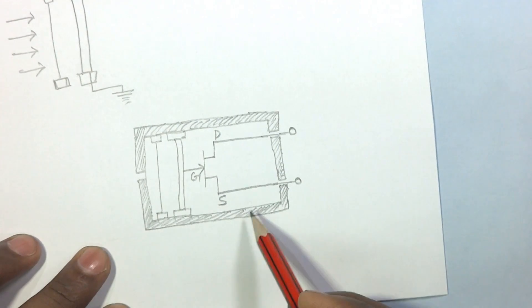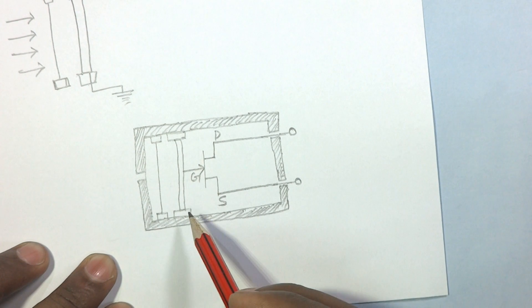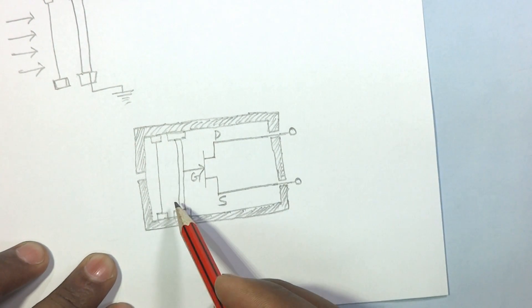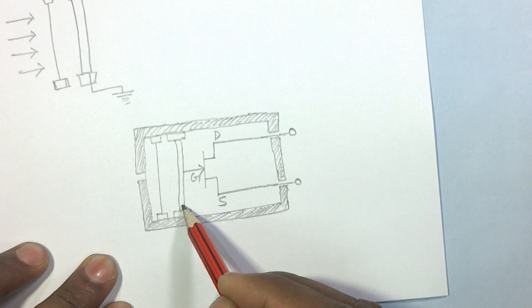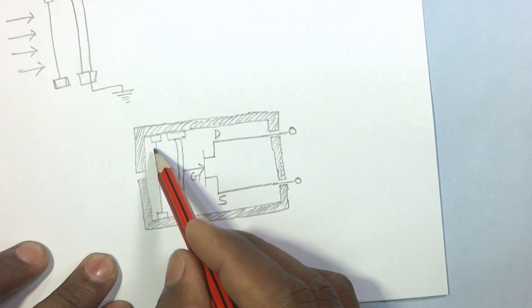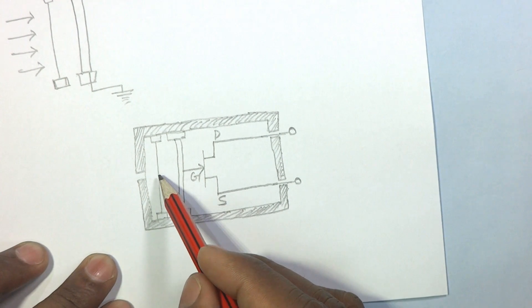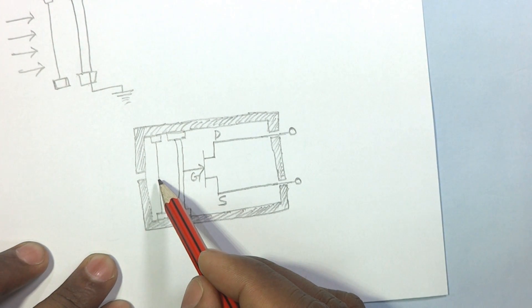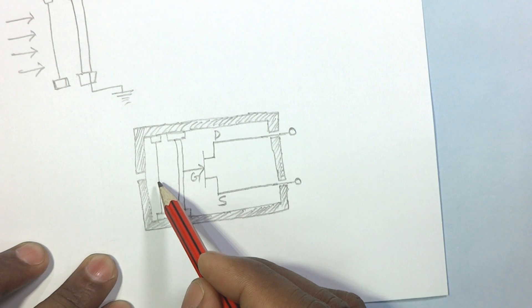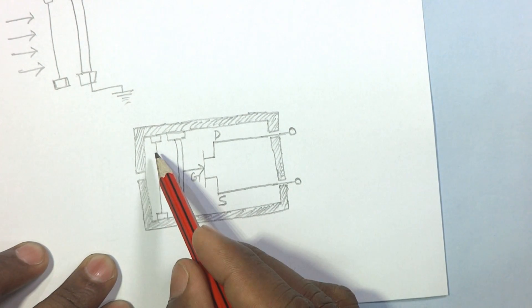This is the construction of the electret microphone. In this structure, there are two plates of a parallel plate capacitor. This one is the pickup plate and this one is the front plate. This plate is made of very thin film like mylar film, Kapton, polypropylene, or PTFE. An electrostatic material is coated on this film which works for many years without being discharged.